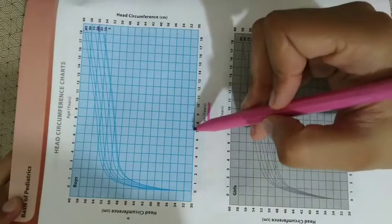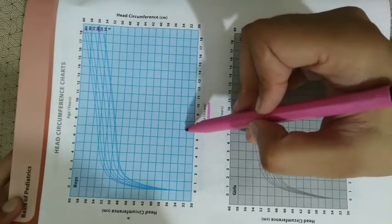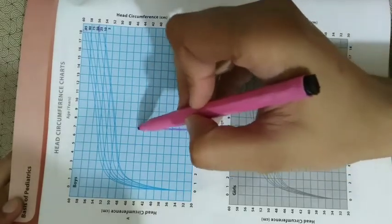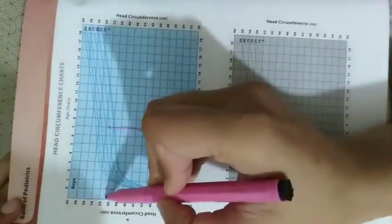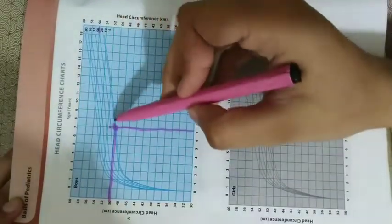So I have a 7 year old child whose head circumference is 50 cm. I will go above and from here and meet here. So it is at the 25th centile.